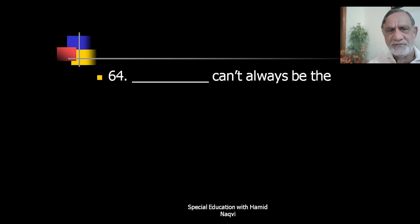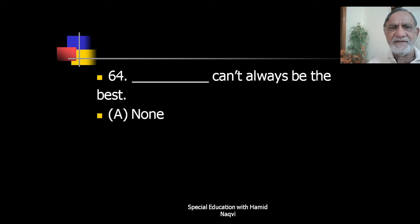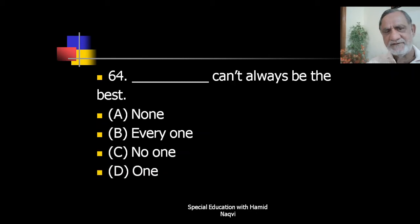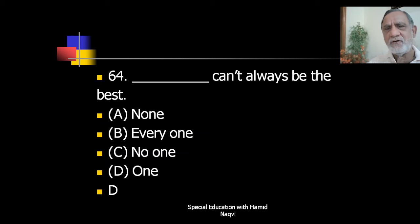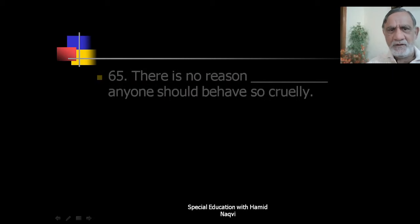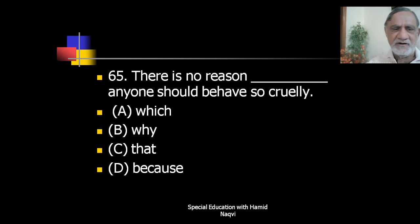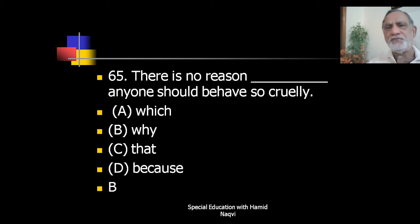'___ can't always be the best.' The correct answer is 'one' — one cannot always be the best. 'There is no reason ___ anyone should behave so cruelly.' The correct is 'why' — there is no reason why anyone should behave so cruelly.